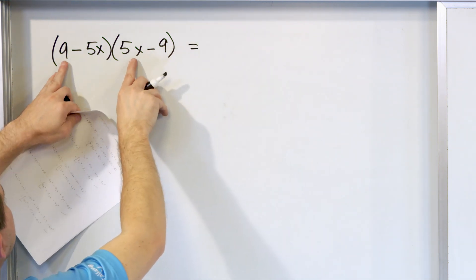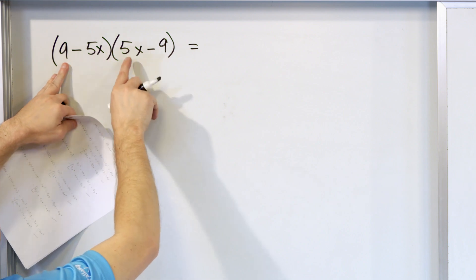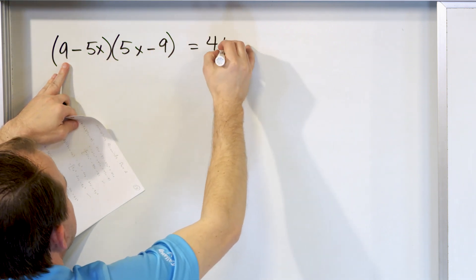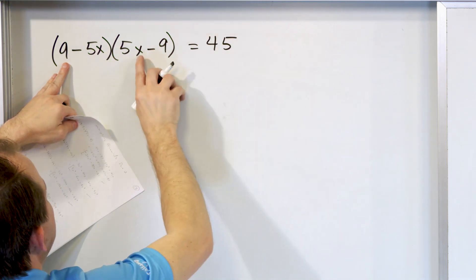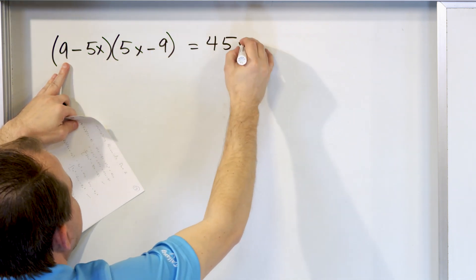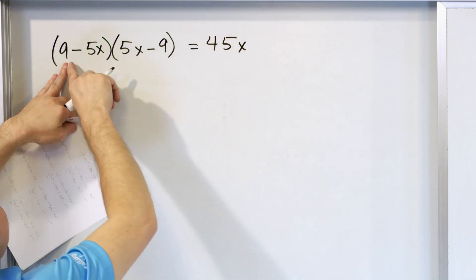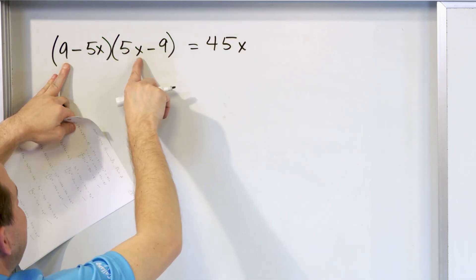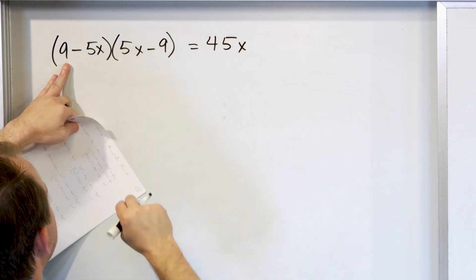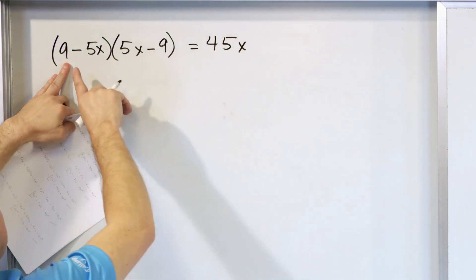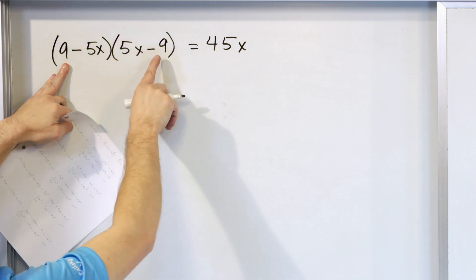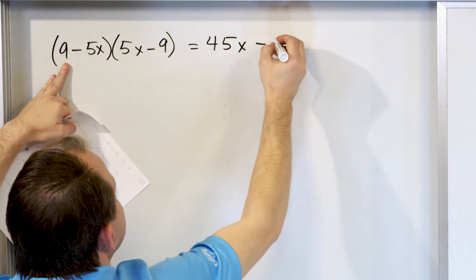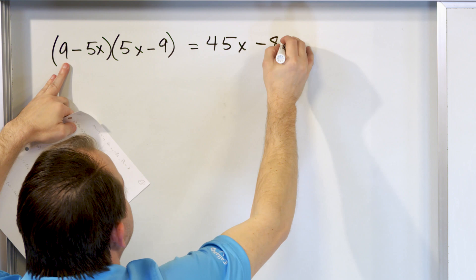The first terms will be these two: 9 times 5x is 45x. Notice there's no x squared here because this is just a 9 and then there's just an x there, so it's 45x. And then the outside terms: negative 9 times positive 9 gives you negative 81.